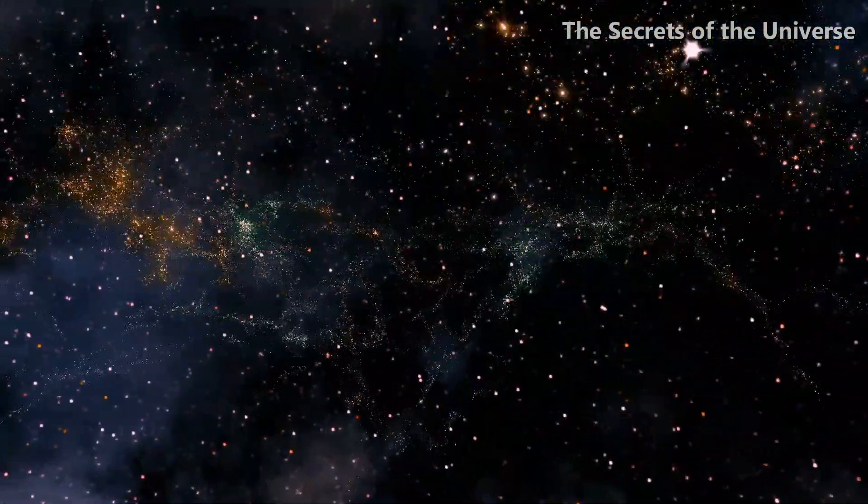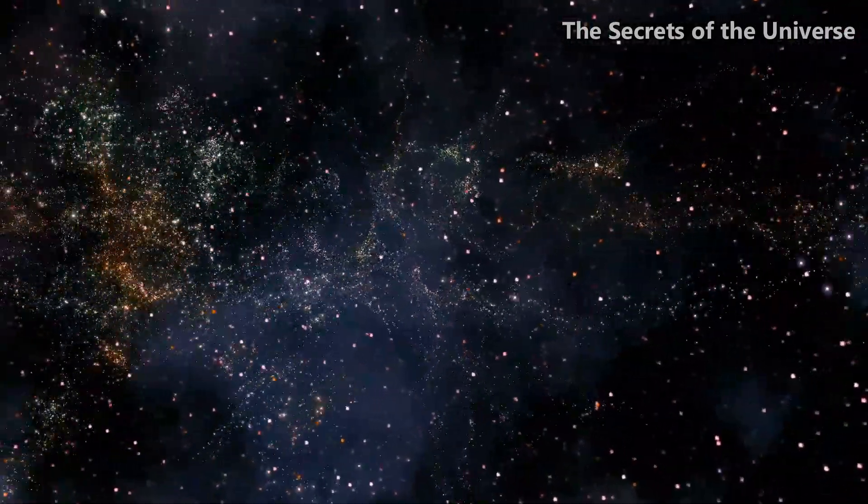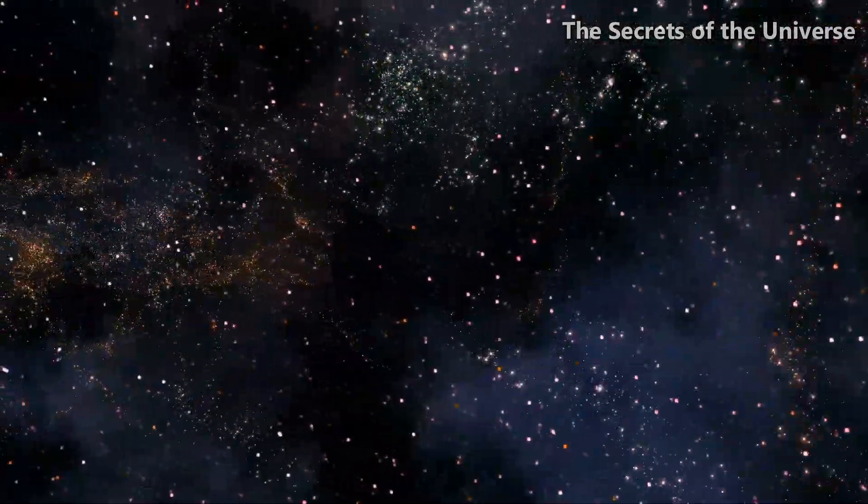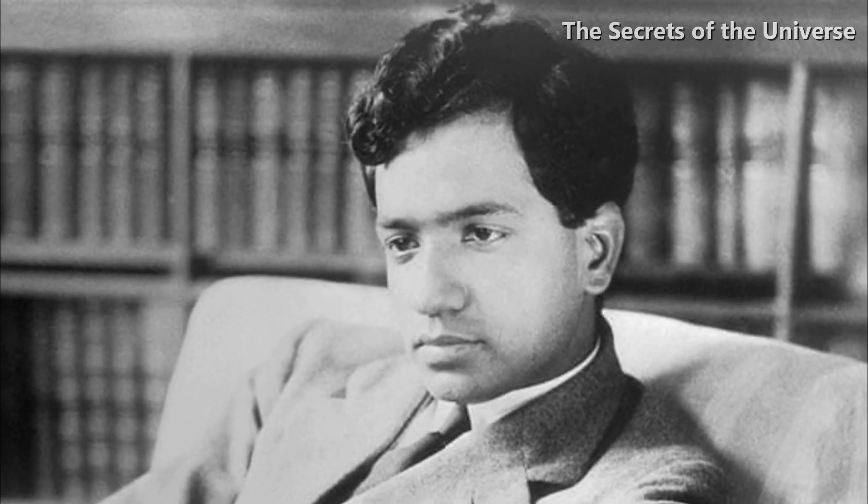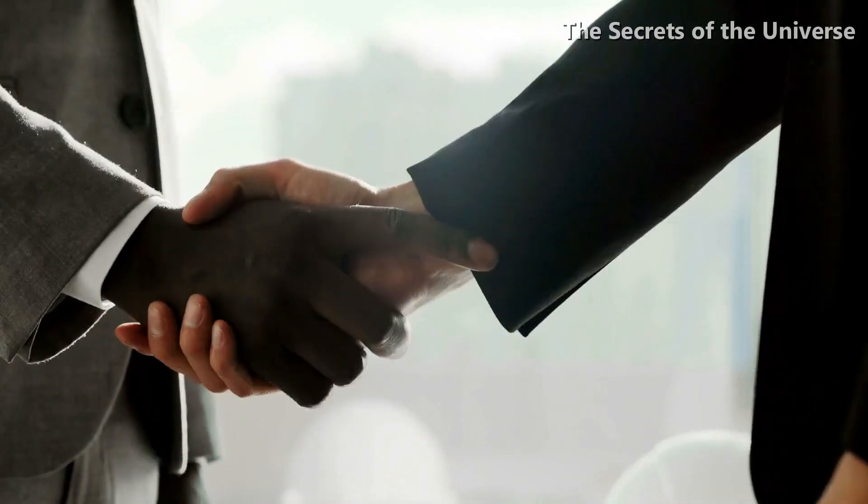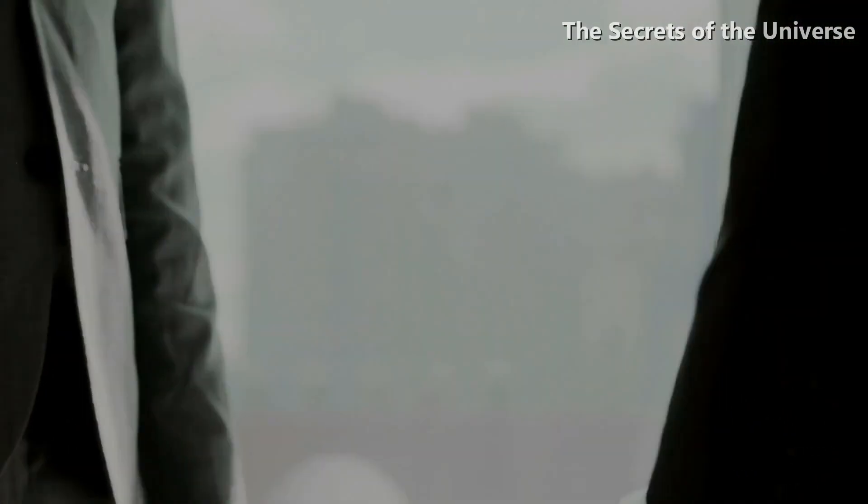Eddington started meeting Chandrasekhar frequently. Chandrasekhar felt motivated that a man of Eddington's reputation is helping him out. Eddington was also working on a similar subject and he encouraged him to produce his results in a conference to be held on January 11, 1935 in England to which Chandrasekhar agreed.